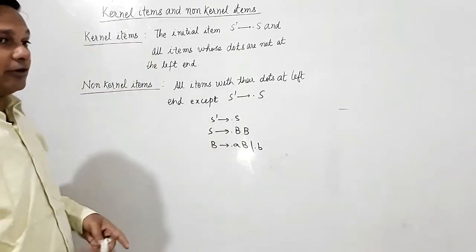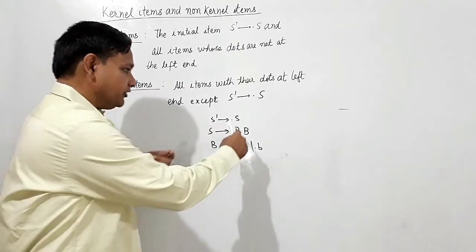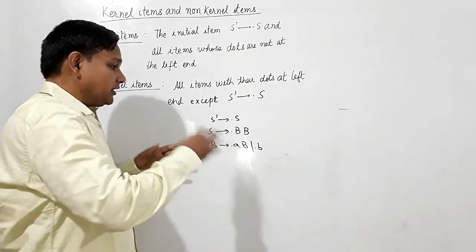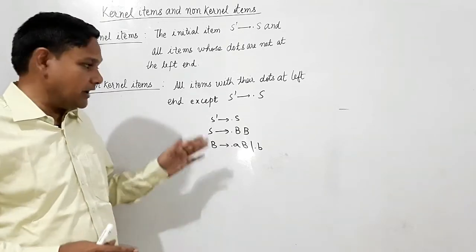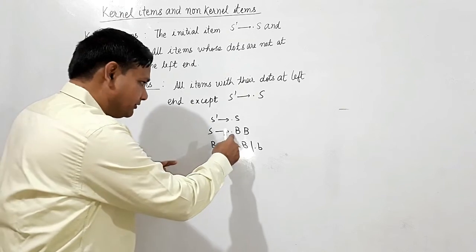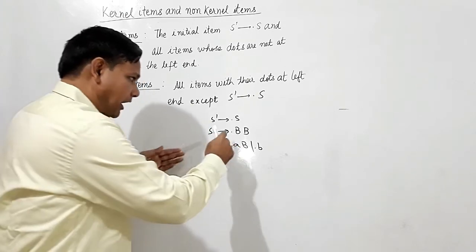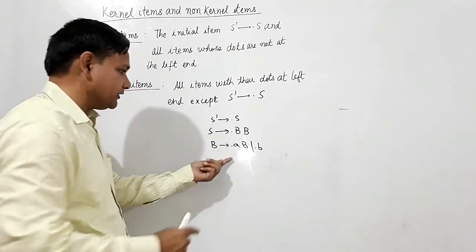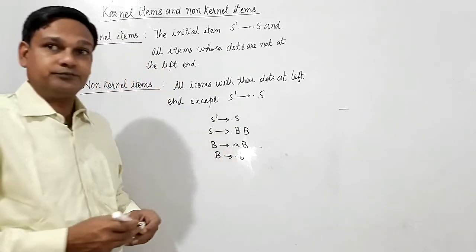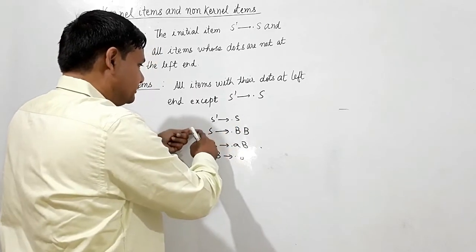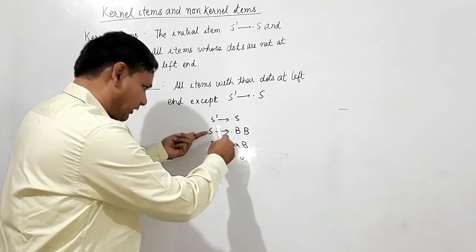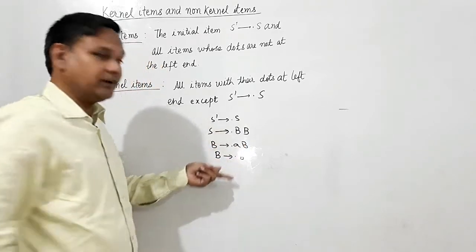According to the definition of kernel items, the initial item in which the dot is at the left is the kernel item. Other items in which the dot is not at the left are kernel items, and non-kernel items are those in which the dot is at the left side — meaning immediately after the arrow at the beginning. We can also write this production as B giving dot B. So this is a kernel item, and all these items with the dot coming immediately after the arrow are non-kernel items.